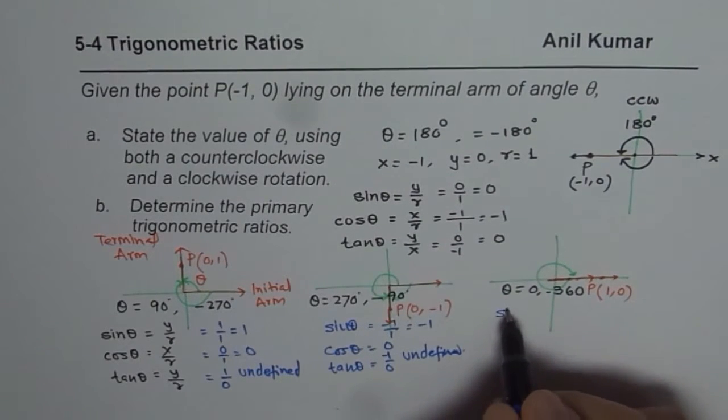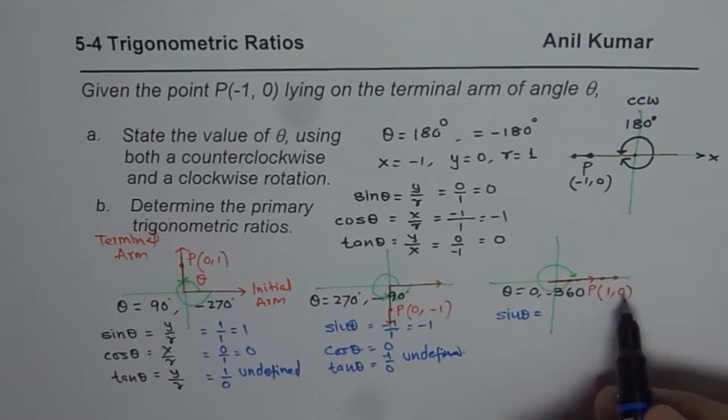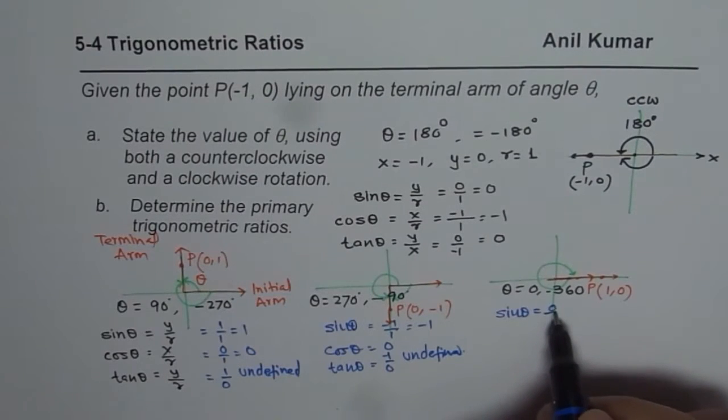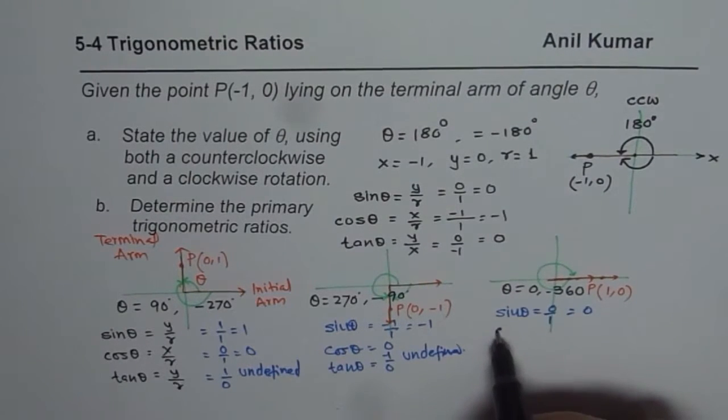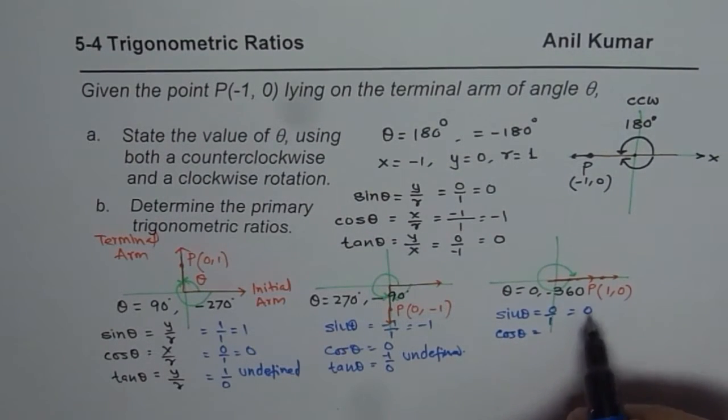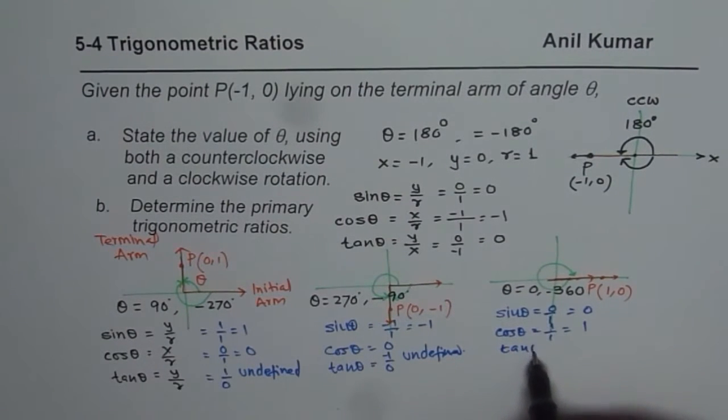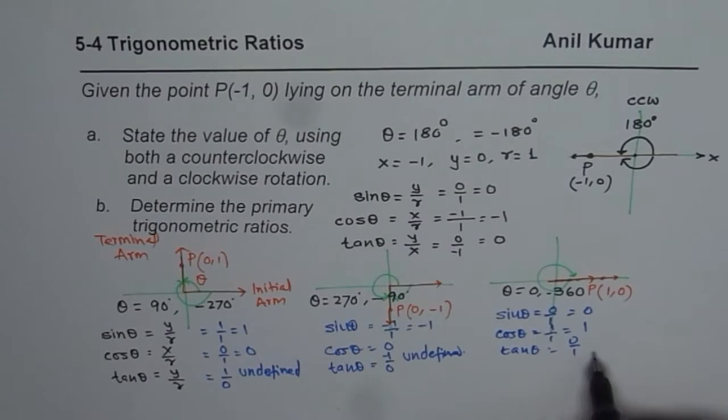In the last case, we have sin theta equals the y value 0, so it is 0 over 1, which is 0. Cos theta equals 1 over 1, which is 1. And tan theta will equal 0 over 1, which is 0.